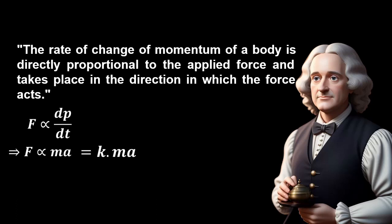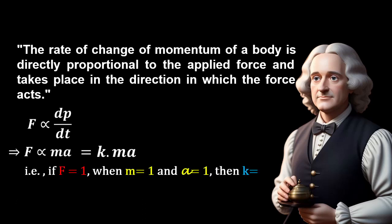If we define the unit of force such that one unit of force causes one unit mass to accelerate by one unit acceleration, then the value of k becomes 1 — that is, if F equals 1 when m equals 1 and a equals 1, then k equals 1. For an object with a fixed mass m, we can rewrite this as F equals mA.